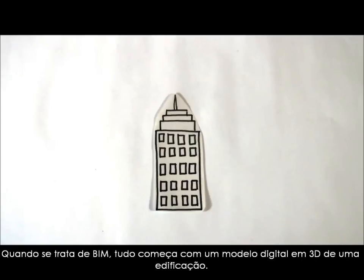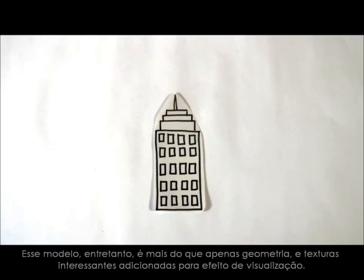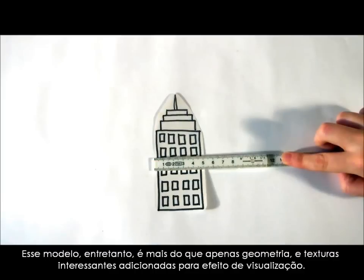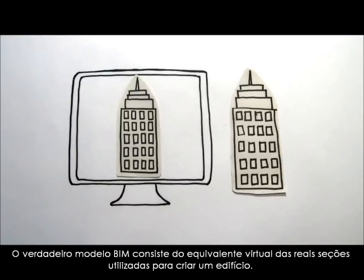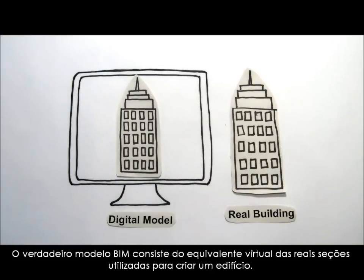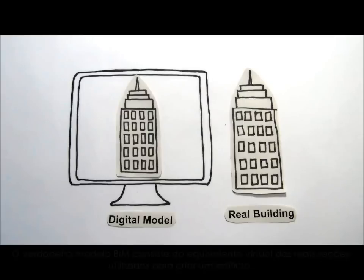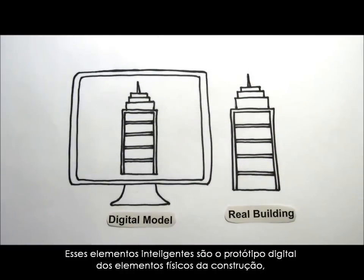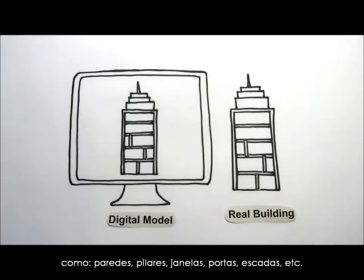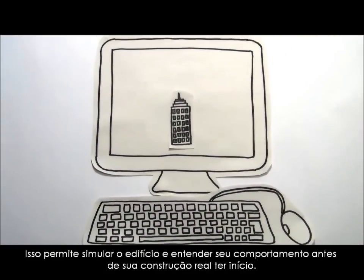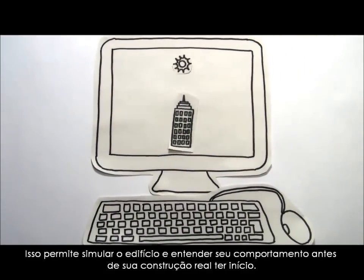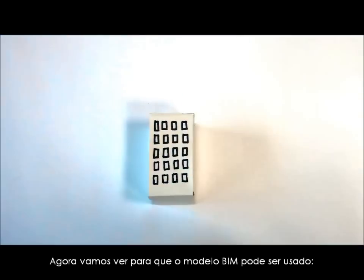When it comes to BIM, everything begins with a 3D digital building model. This model, however, is more than just simple geometry and some interesting textures added to it for visualization. A true BIM model consists of the virtual equivalence of the actual building sections used to create a building. These intelligent elements are the digital prototype of the physical building elements such as walls, columns, windows, doors, stairs, etc., that allow us to simulate the building and understand its behavior before the actual construction begins. Now let's see what a BIM model can be useful for.